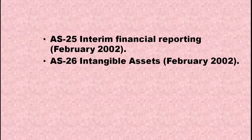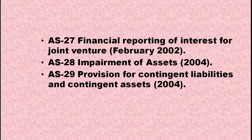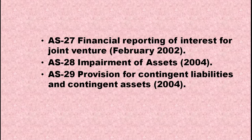AS25 is about interim financial reporting. AS26 is about intangible assets. AS27 covers financial reporting of interest in joint ventures. AS28 deals with impairment of assets. AS29 is about provisions for contingent liabilities and contingent assets.